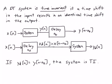I have two flowcharts here that will help explain that idea. In one scenario, we take an input x(n), pass it through the system to get output y(n), and then delay y(n) by n0 samples, giving us y(n - n0).